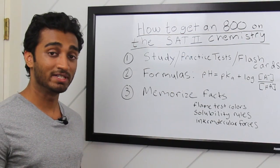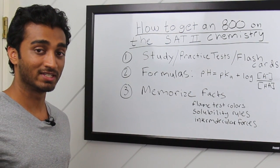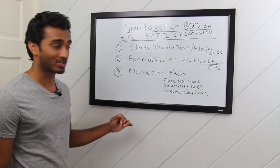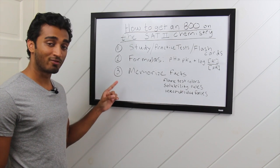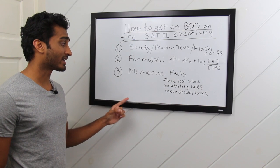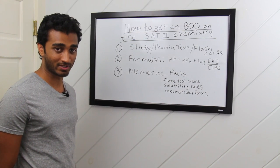And there you guys have it, the three tips on how to get an 800 on the SAT II chemistry exam. Study, take practice tests, and write flashcards. Memorize all the formulas and be comfortable manipulating them. Memorize all the key facts: flame test colors, solubility rules, and intermolecular forces.